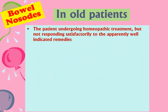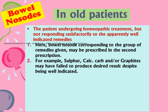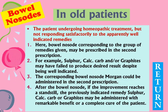In old patients undergoing homeopathic treatment who are not responding satisfactorily — where apparently well-selected remedies have been given without desired results — the bowel nosode corresponding to the group of remedies given may be prescribed in the second prescription. For example, if Sulphur, Calcarea, or Graphitis have failed, the corresponding bowel nosode Morgan can be administered. After the bowel nosode, if improvement reaches a standstill, the previously indicated remedy may then be given with remarkable benefit or complete cure.